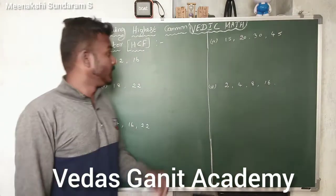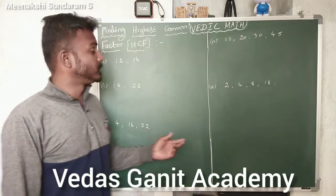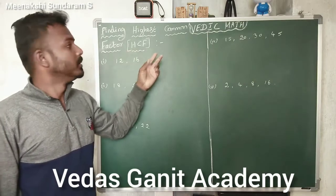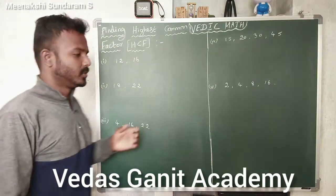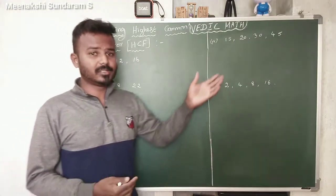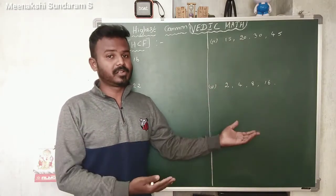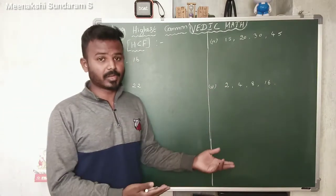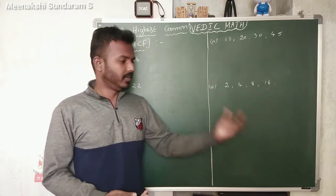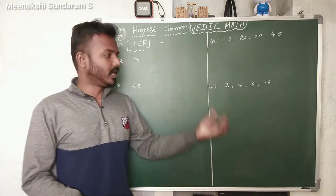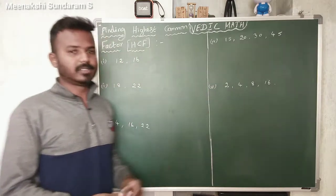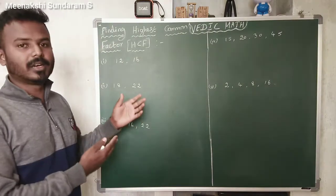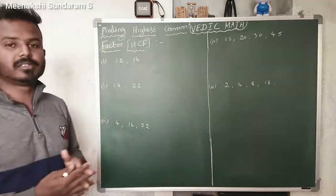Hello everyone, welcome to my channel. In this video, I am going to explain how to find the HCF of a number in Vedic Math. Usually we will know how to find the HCF of a number by prime factorization methods. When given two numbers, first we find the prime factors of each number, then we take the common factor, and the highest common factor is the answer. But now we can use a trick — the Vedic Math rule — to find the HCF of a number.